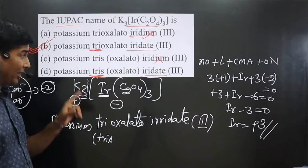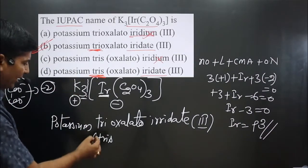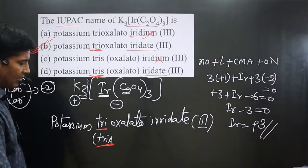Agar dono me kisi ekko select karna hai to aapko isko select karna hai, thikai? Tri ko na ki tris ko. But anyway we can use both, tris as well as tri also.